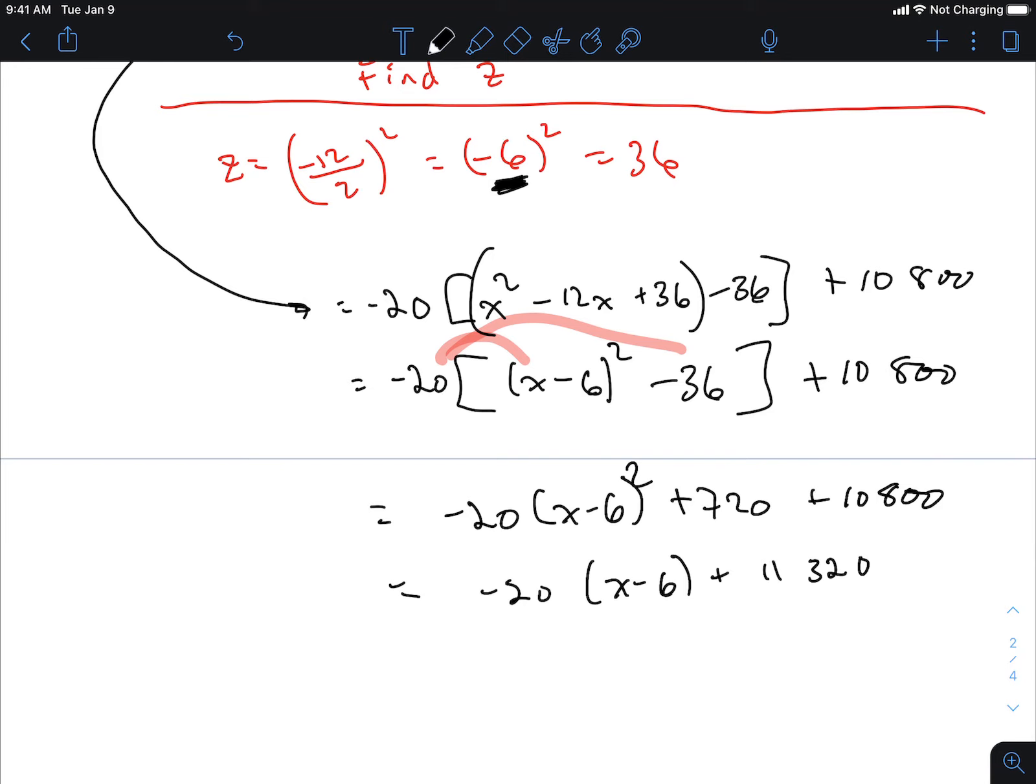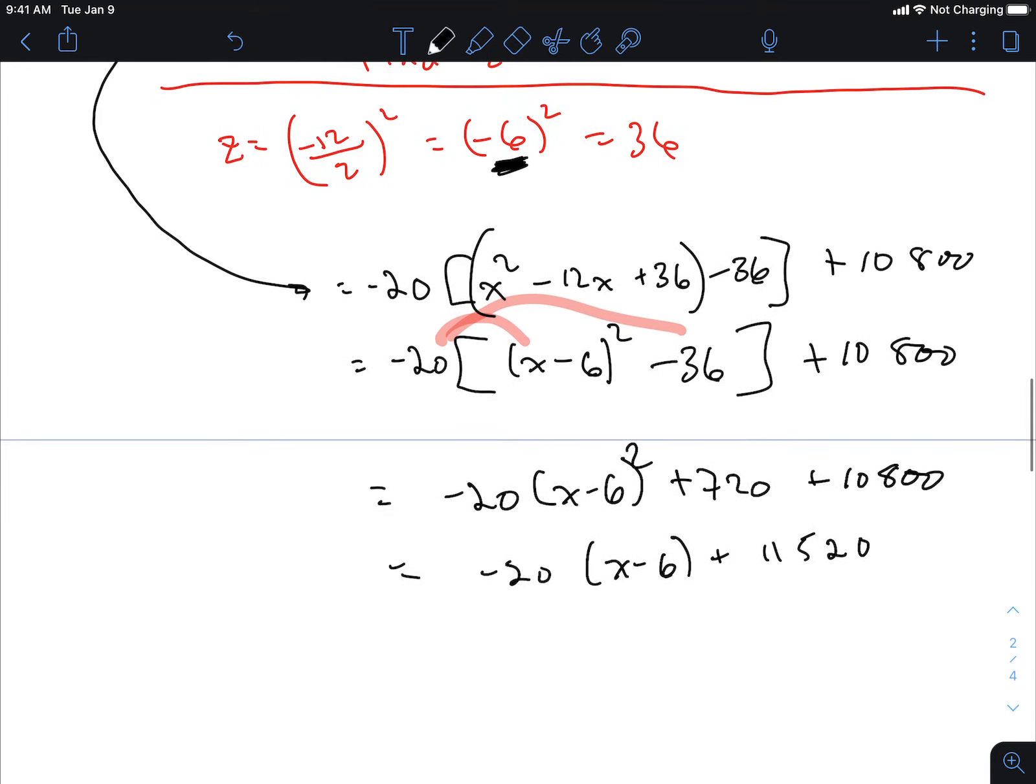Negative 20 times x minus 6 squared plus 720 plus 10,800 is 11,520. What's the vertex? Let's state the vertex: (6, 11,520). Let's put it back into the context of the question now.